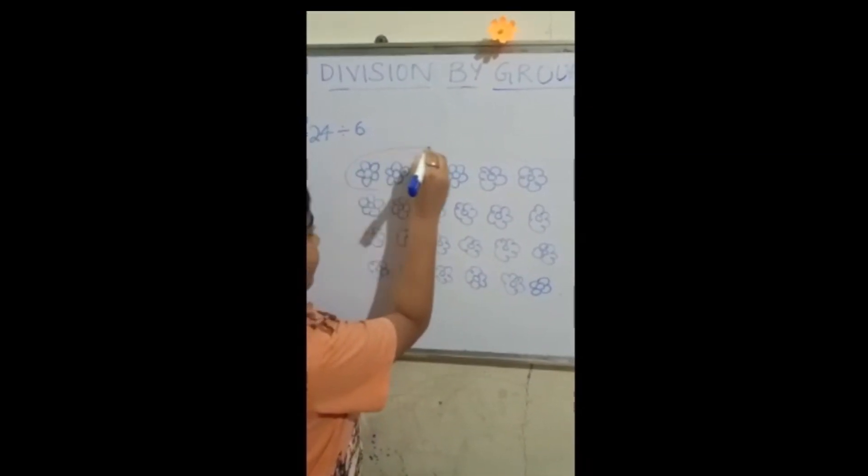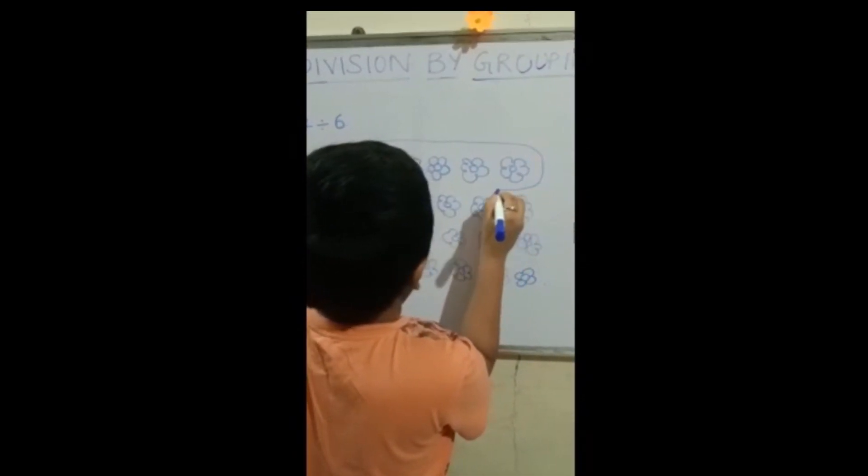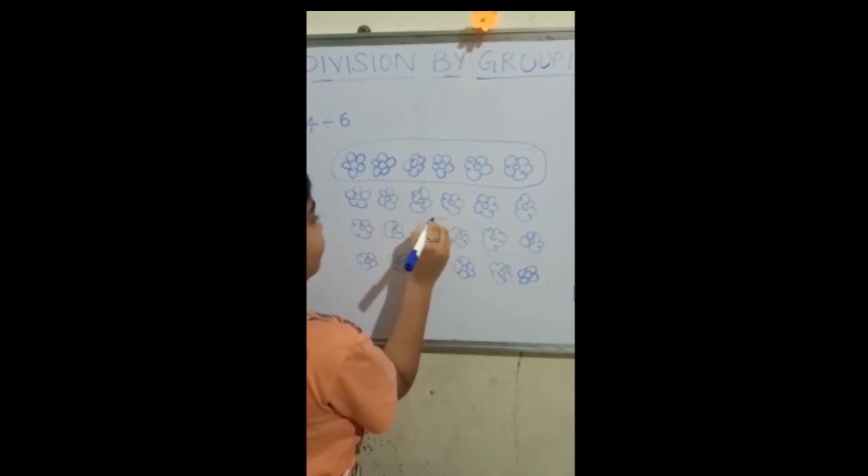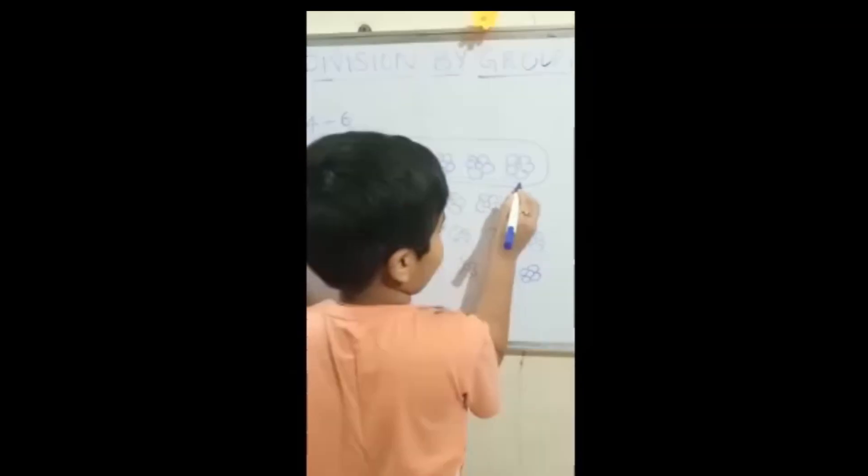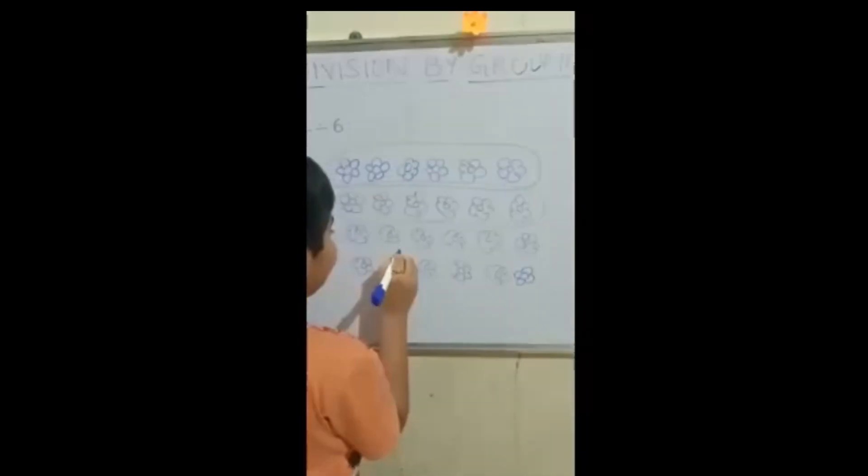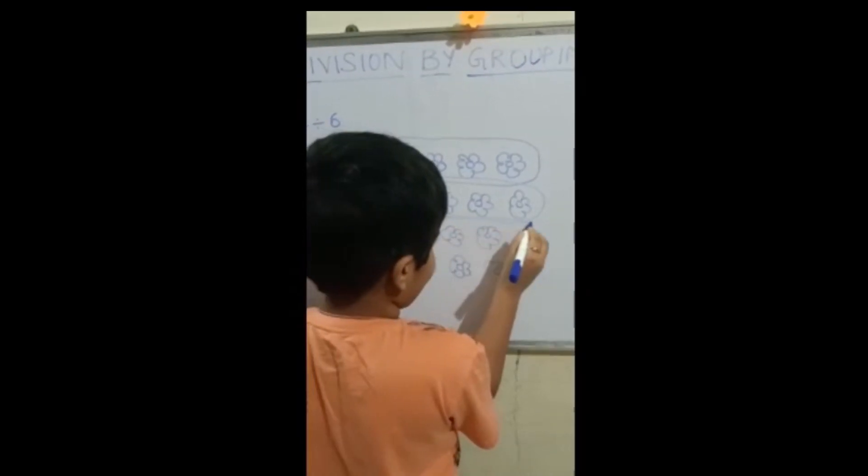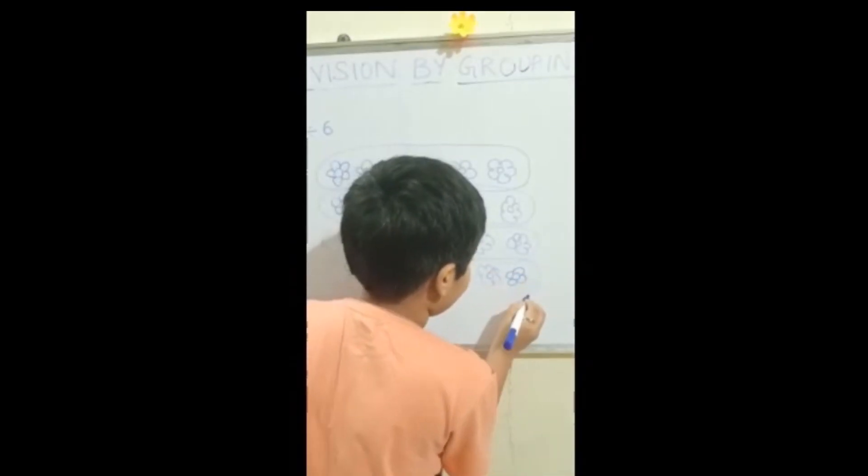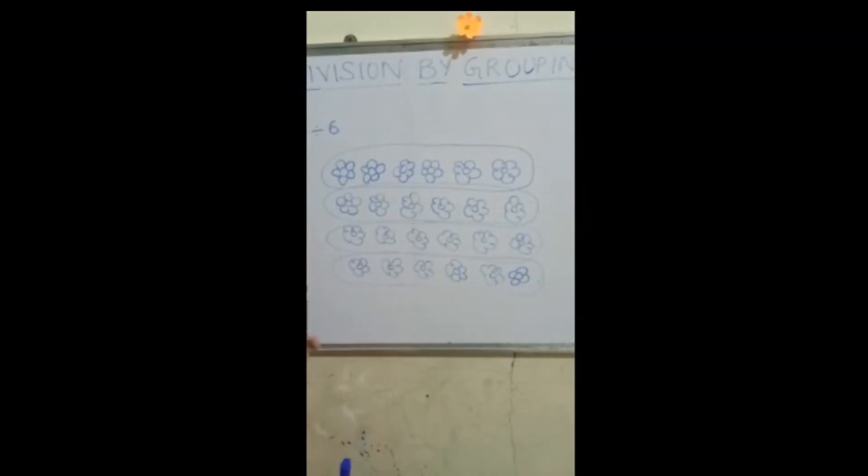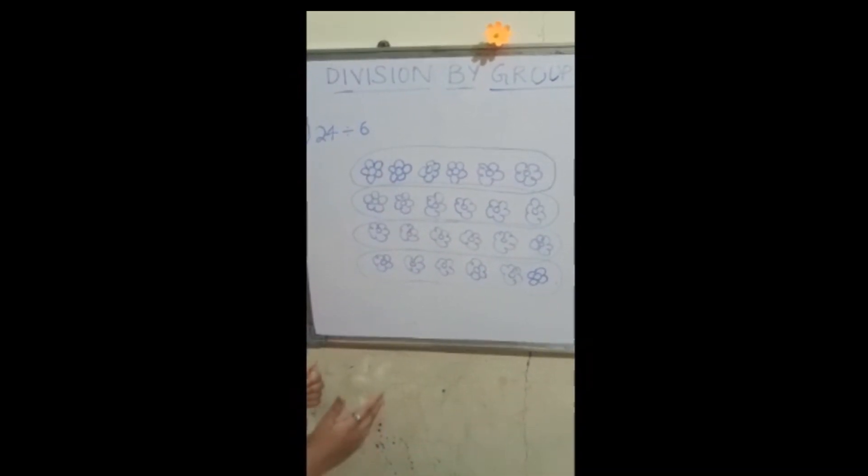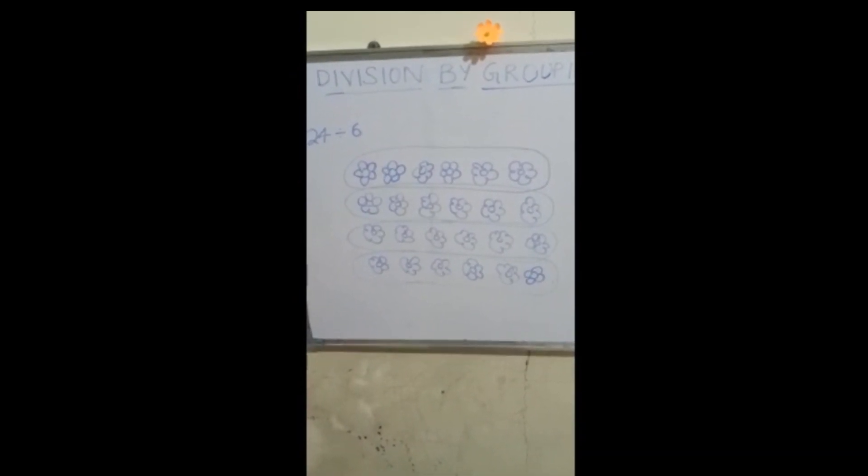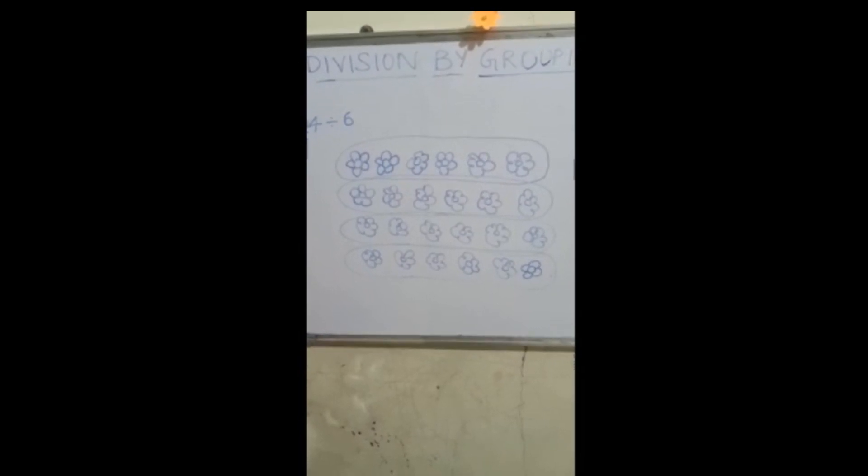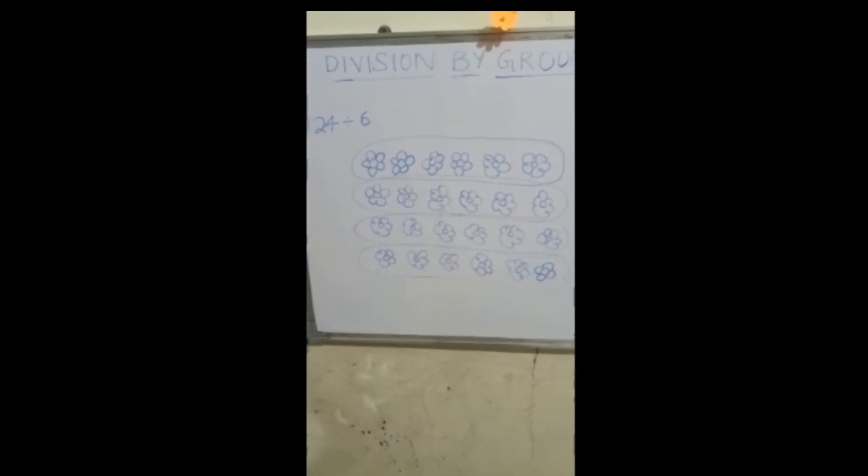Let us make groups of six. Here nothing is left so the remainder will be zero. And 24 will be exactly divisible by 6.